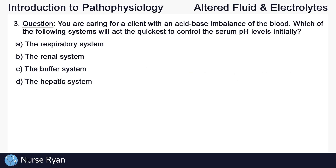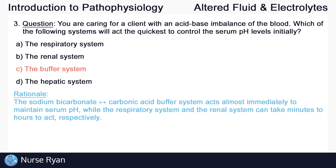Question number three. You are caring for a client with an acid-base imbalance of the blood. Which of the following systems will act the quickest to control the serum pH levels initially? The answer here is C, the buffer system. The sodium bicarbonate to carbonic acid buffer system acts almost immediately to maintain serum pH, while the respiratory system and the renal system can take minutes to hours to act, respectively.